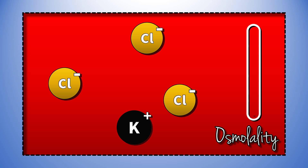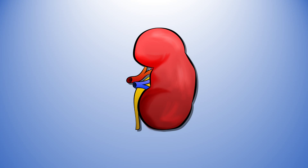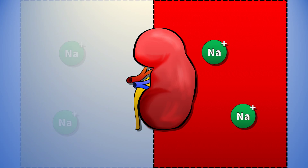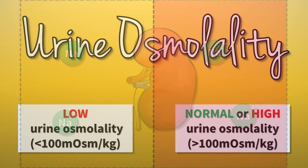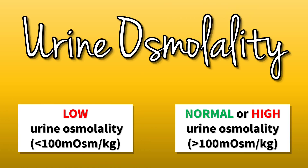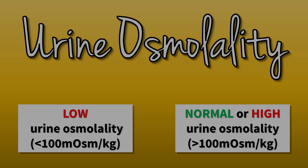You need to investigate this further. The next step is to see what the kidneys are up to. Is the more dilute blood reflected by more dilute urine? Take a look at your urine osmolality — is it low, normal, or high? By the way!